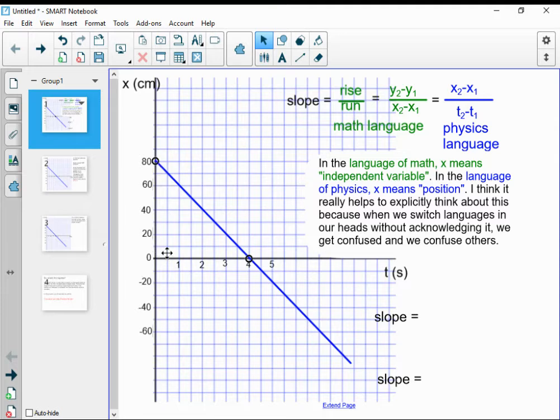In green here, rise over run. I'm going down from 80 centimeters to zero centimeters. In blue, position two minus position one is zero centimeters minus 80 centimeters. The run in physics language, I'm looking at a difference in times. Time two minus time one, so I'm doing four seconds minus zero seconds.